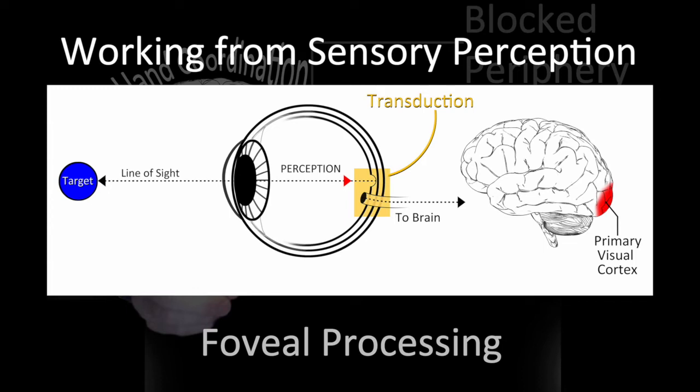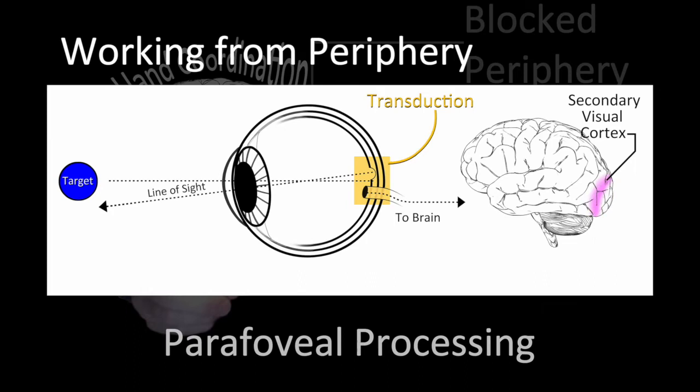The line of sight looking right at the target is where the most concentrated information about that target is being translated, transduced, and broadcast to the back of your brain, which is where your visual cortex is located.